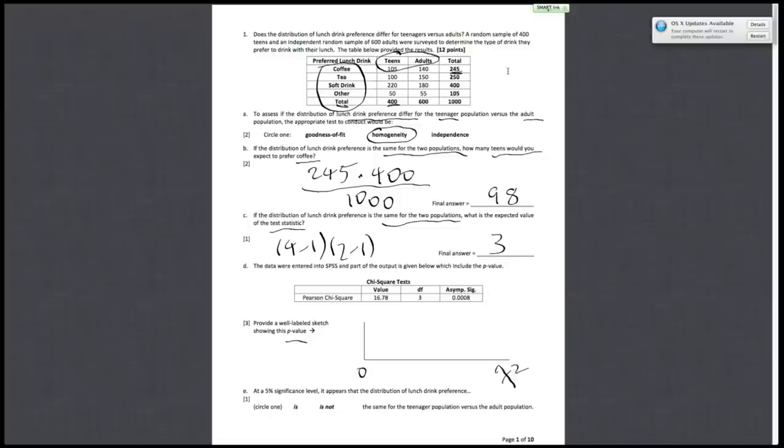Start from zero and draw a normally looking chi-square distribution. We have to label what kind of chi-square distribution, and we said that our test value is three, so the degrees of freedom are just going to be three and our test statistic was 16.78.